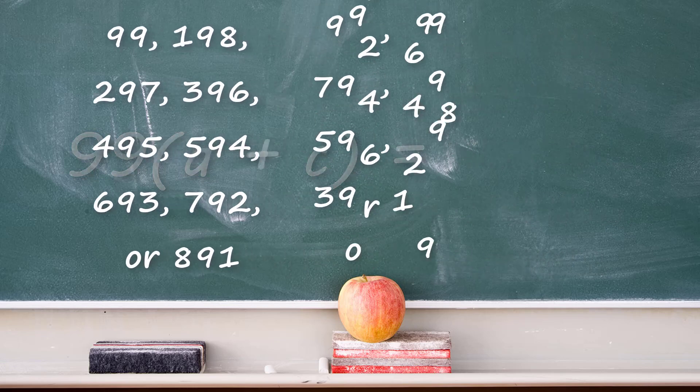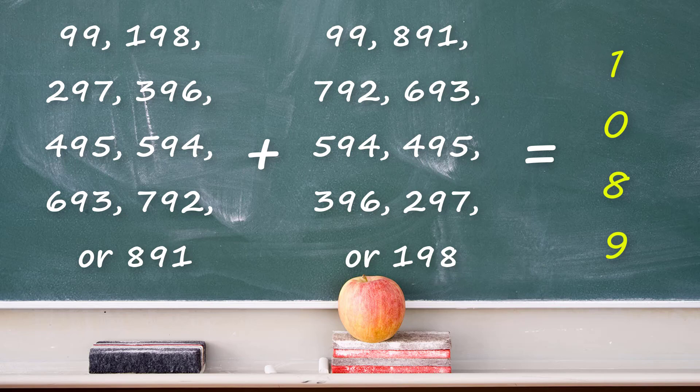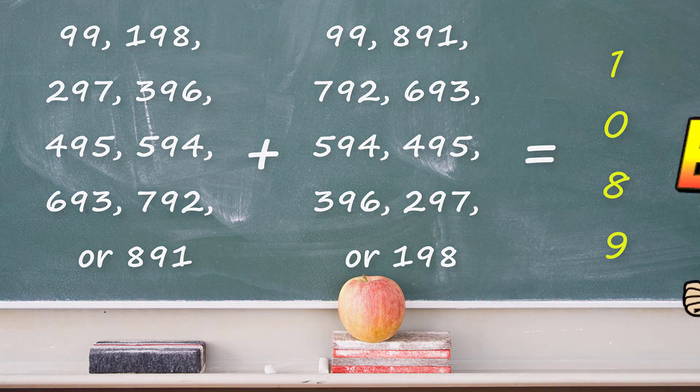Each of these will produce 1089 after adding it to the reverse of itself, as we did in the final step of this trick. And that's why it works.